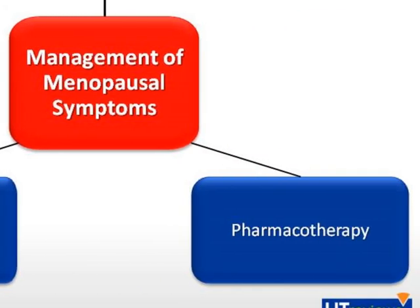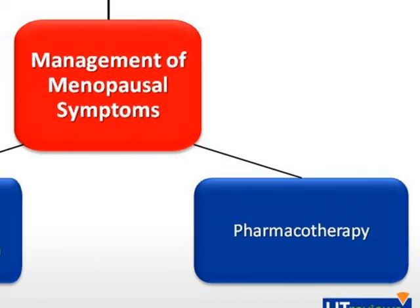Pharmacotherapy can be non-hormonal or hormonal prescription medication. Examples of non-hormonal medications include gabapentin, clonidine, and selective serotonin reuptake inhibitors such as venlafaxine and paroxetine. Hormonal therapy usually consists of a combination of estrogen and progestin.